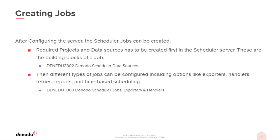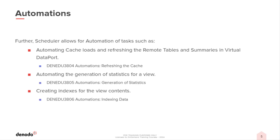Followed by this, in the module Denodo Scheduler Jobs, Exporters, and Handlers, students will learn about different types of jobs such as VDP, VDP Cache, and VDP Indexer — how they can be configured including options like exporters to move data to other systems, handlers, retries in case of errors, reports, and time-based scheduling, in the form of demonstrations.